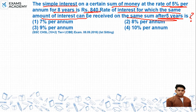Question में हमें कहा गया है कि एक certain sum है, उस पे हमें 5% rate of interest पे 8 years के लिए Rs. 840 simple interest मिलता है। अगर यही simple interest same sum पे हमें 5 years के लिए मिले तो rate of interest क्या होगा, यह हमें calculate करना है।